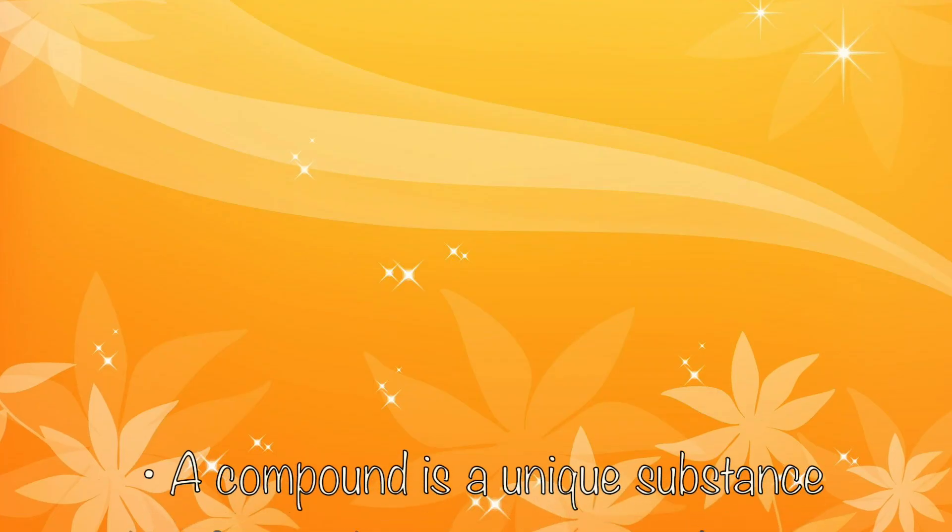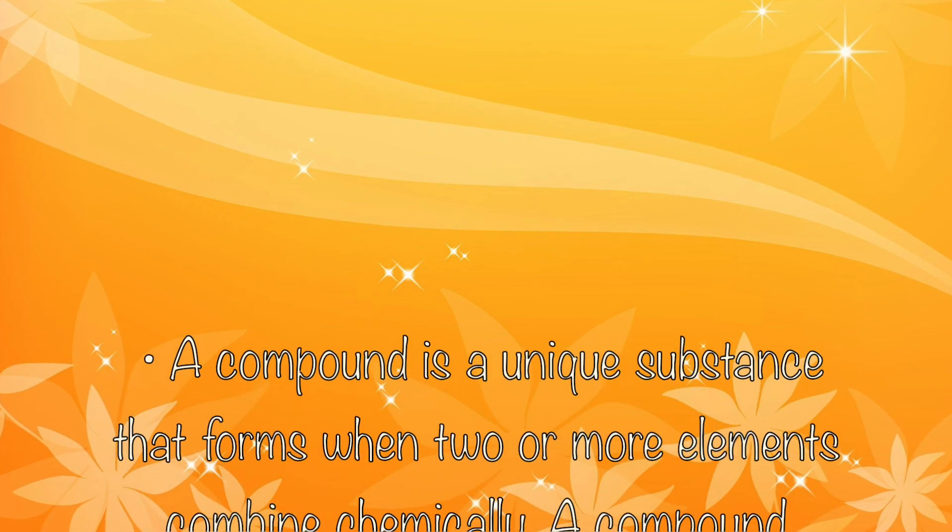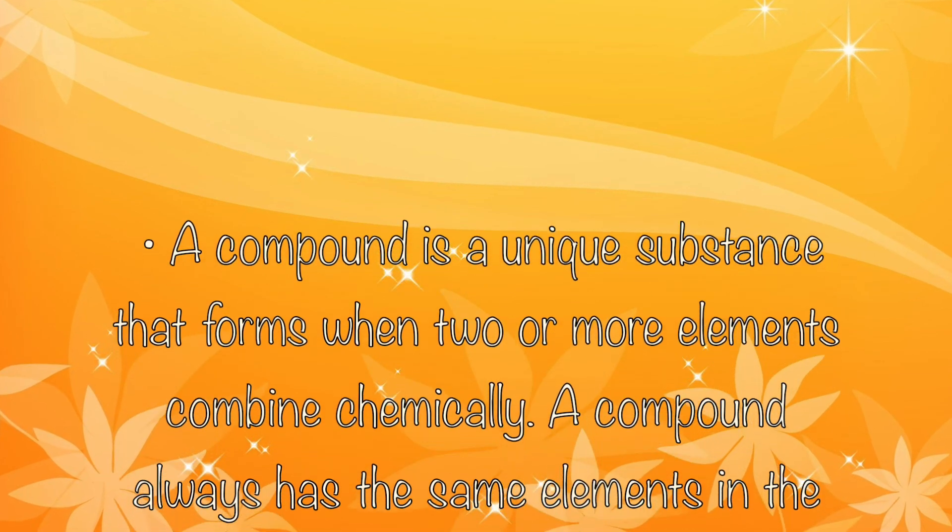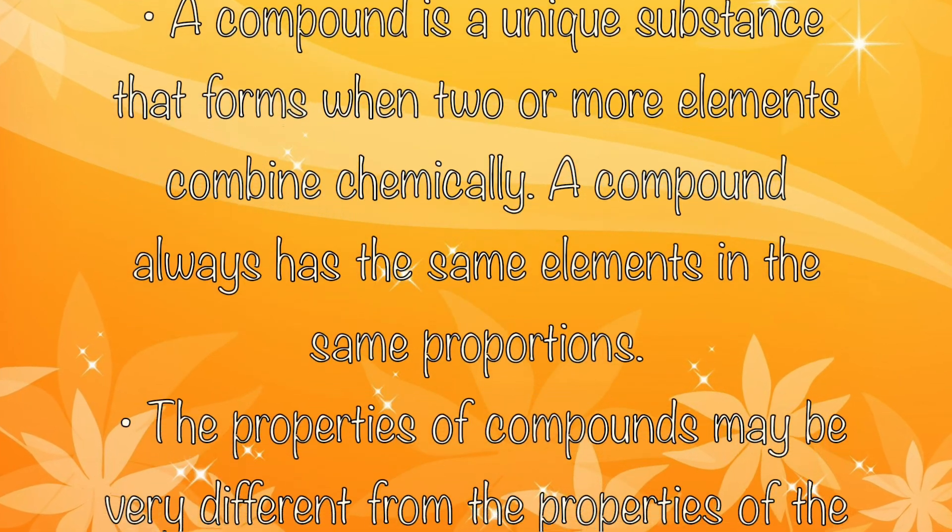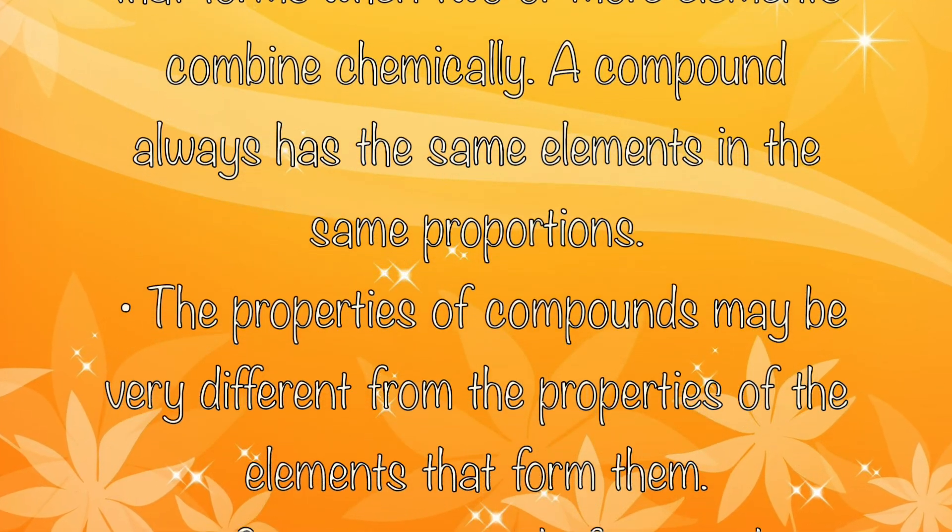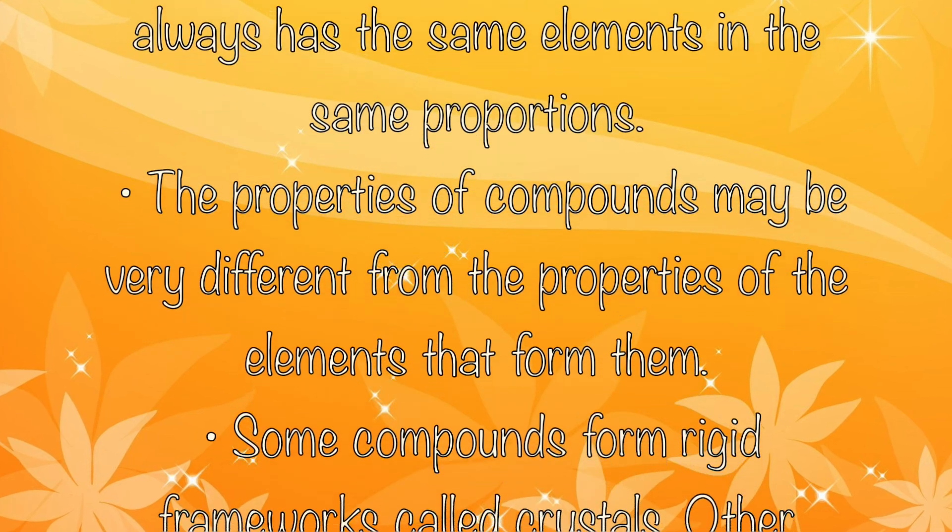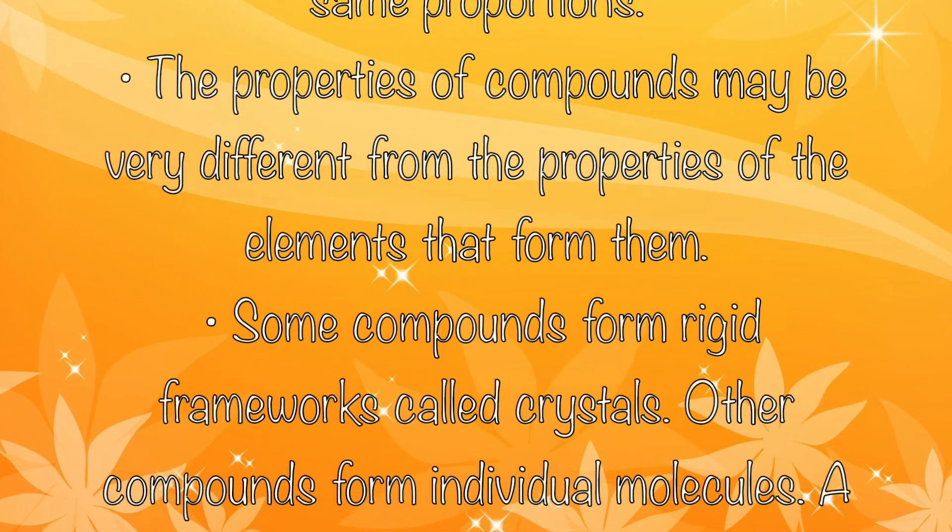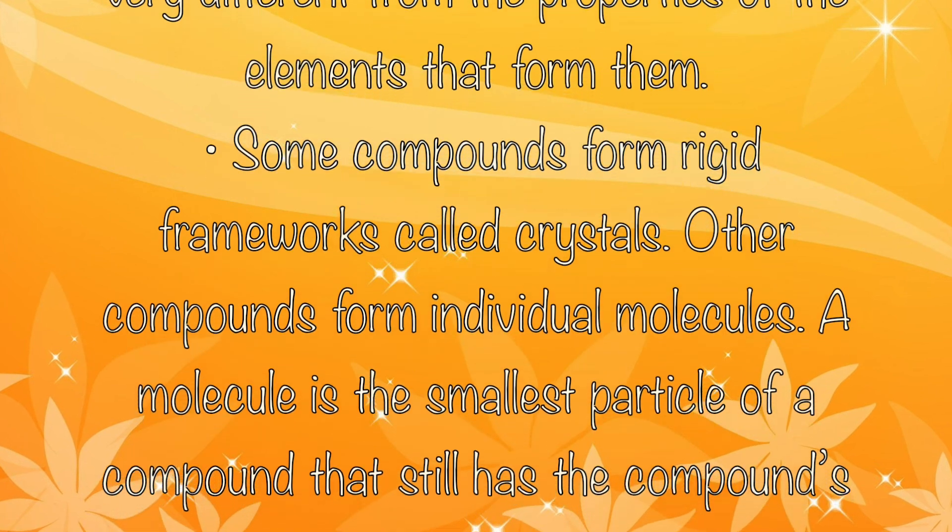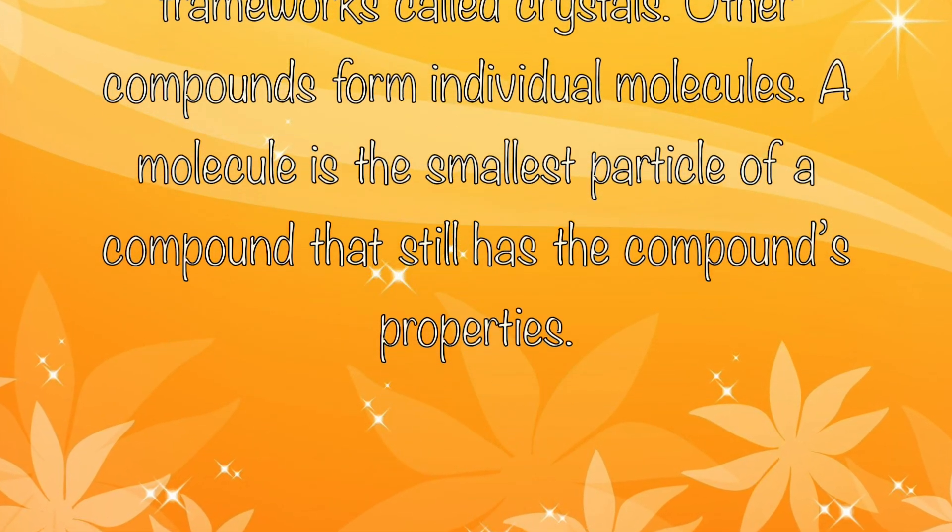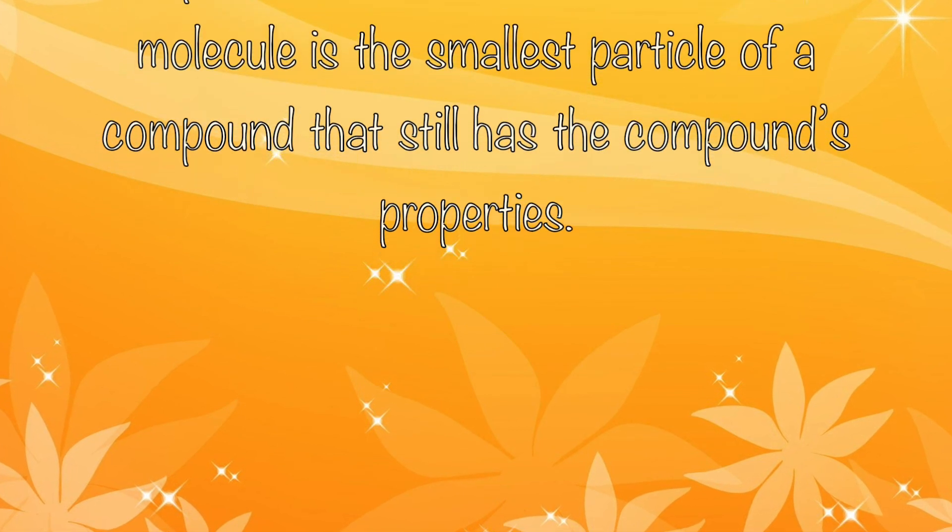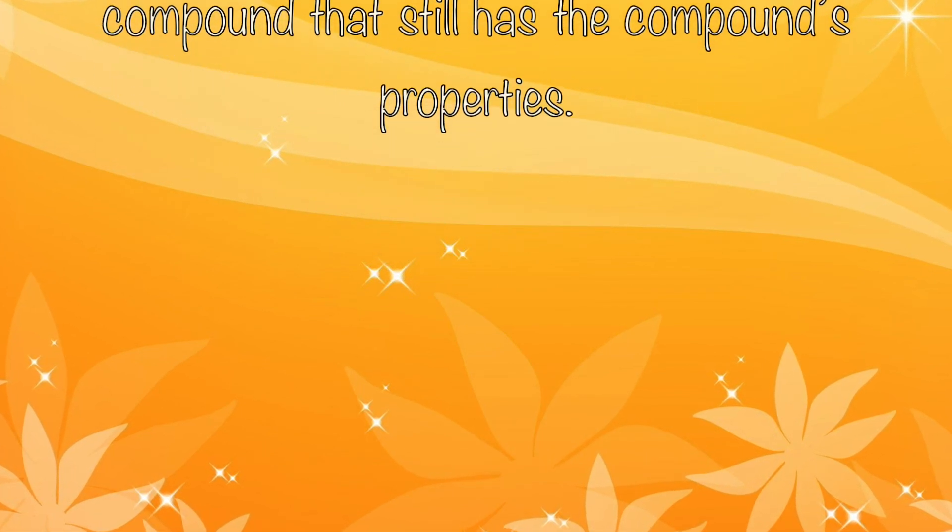So let's summarize this section. A compound is a unique substance that forms when two or more elements combine chemically. A compound always has the same elements in the same proportions. The properties of compounds may be very different from the properties of the elements that form them. And some compounds form rigid frameworks called crystals. Other compounds form individual molecules. A molecule is the smallest particle of a compound that still has that compound's properties.